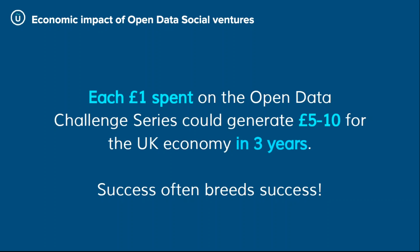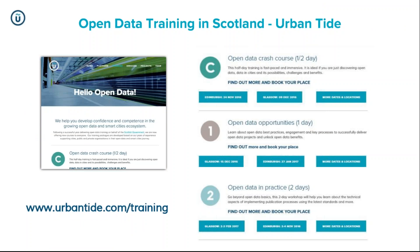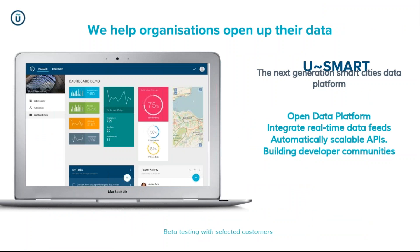From an Urban Tide point of view, we've delivered those training courses with 27 events, with 317 public sector organisations sending attendees, and we're just finalising the evaluation report which is very positive. Urban Tide also has open data opportunities available on our website. In terms of publication of open data, we now have available an open data software-as-a-service platform which allows public and private sector organisations to put their data on the internet in just a few clicks. Up to 10 data sets is completely free forever, so it can be used as a testing environment.